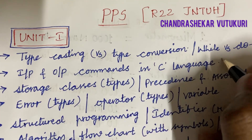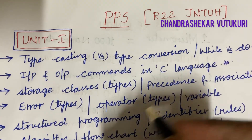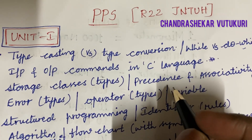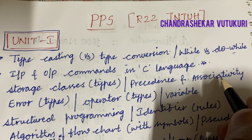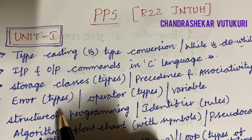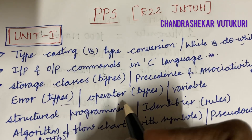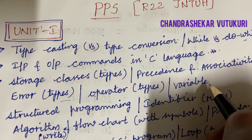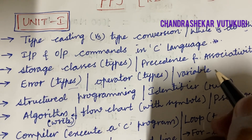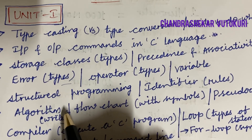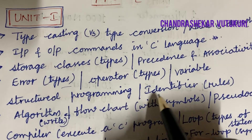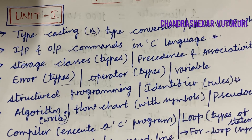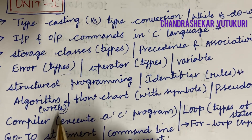Input and output commands in C language may be a very important question. Storage classes and their types, and the differences between precedence and associativity, may be short questions. Operators and their types, and defining the term variable — such questions may appear in long as well as short form. Explain about structured programming, and what is an identifier and the rules of an identifier, may also be important questions.